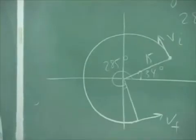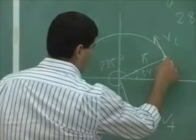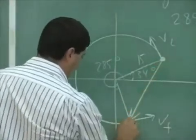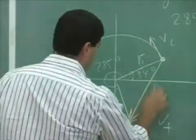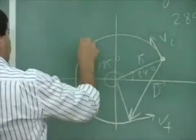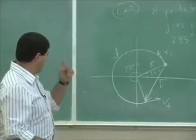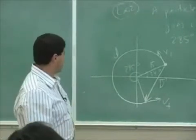The displacement vector starts from where you began to where you ended. That's the displacement vector. The distance is the total distance that you traveled. And then we'll put in some more stuff into it.